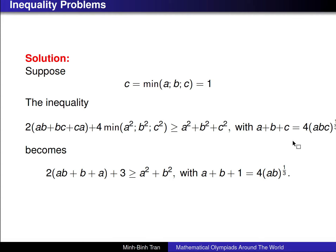Now let's go to the solution. This is the inequality that we have. We need to prove that 2(AB + BC + CA) + 4·min(A², B², C²) ≥ A² + B² + C².